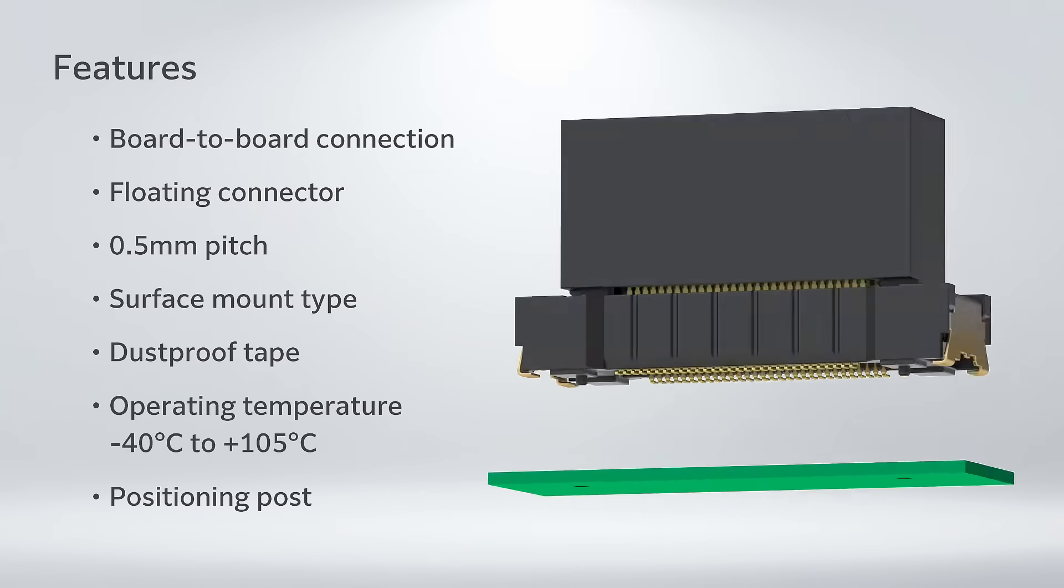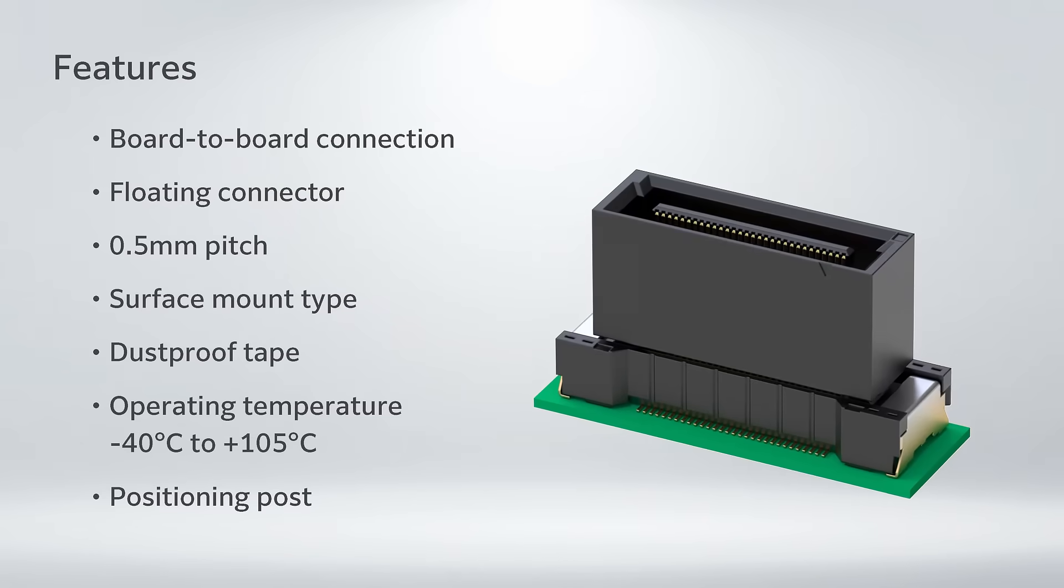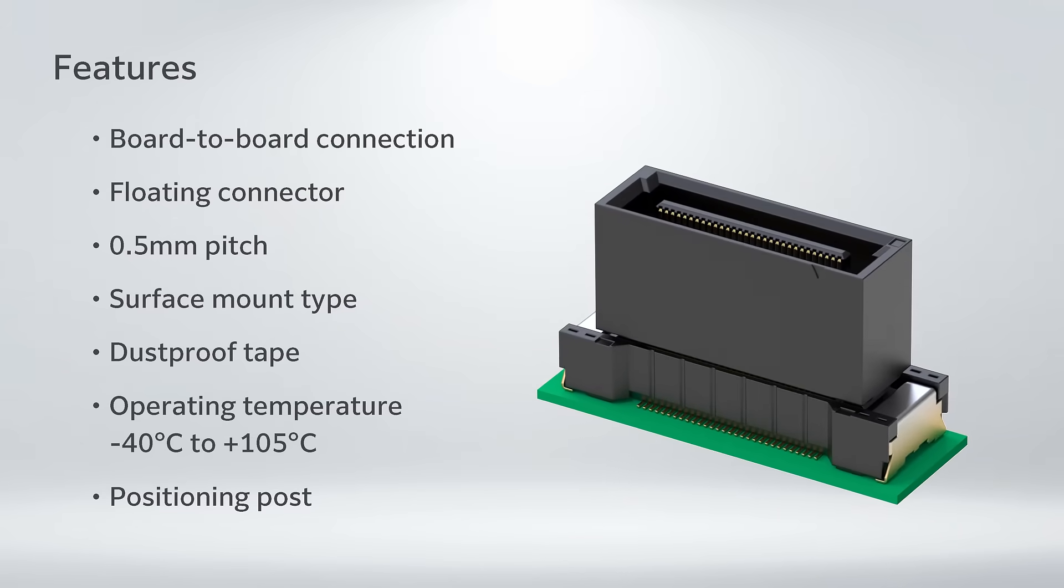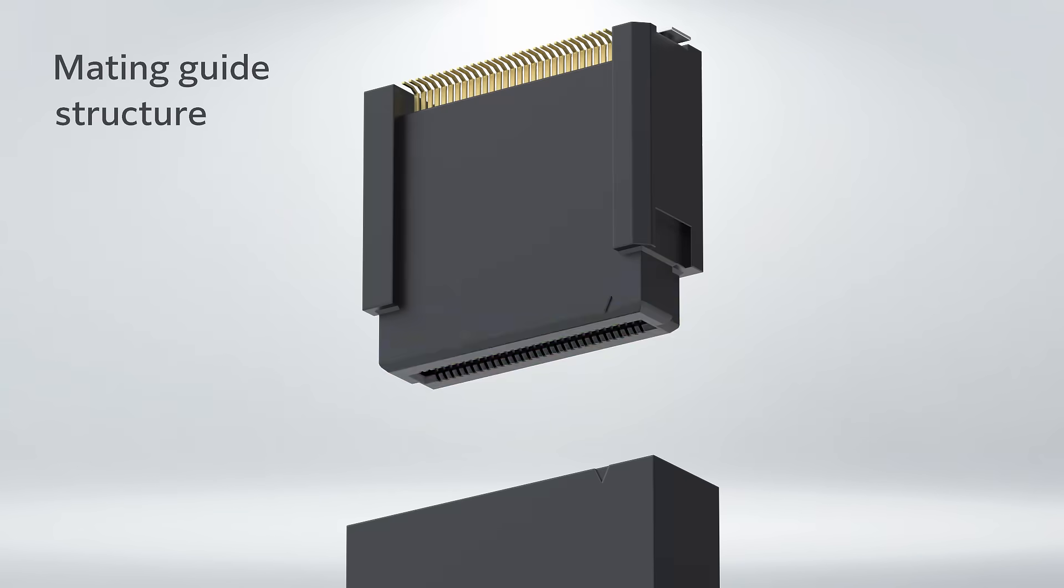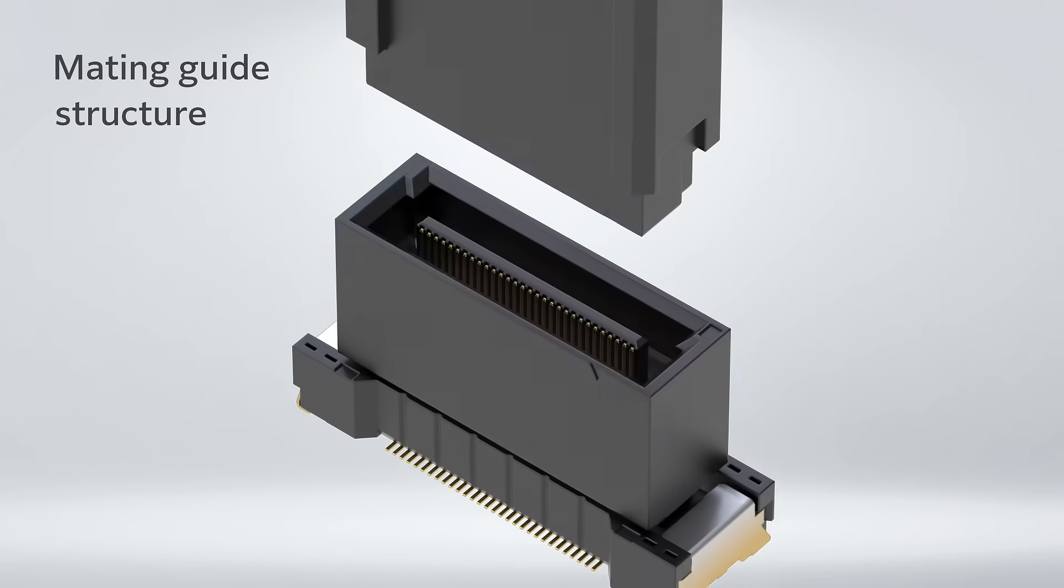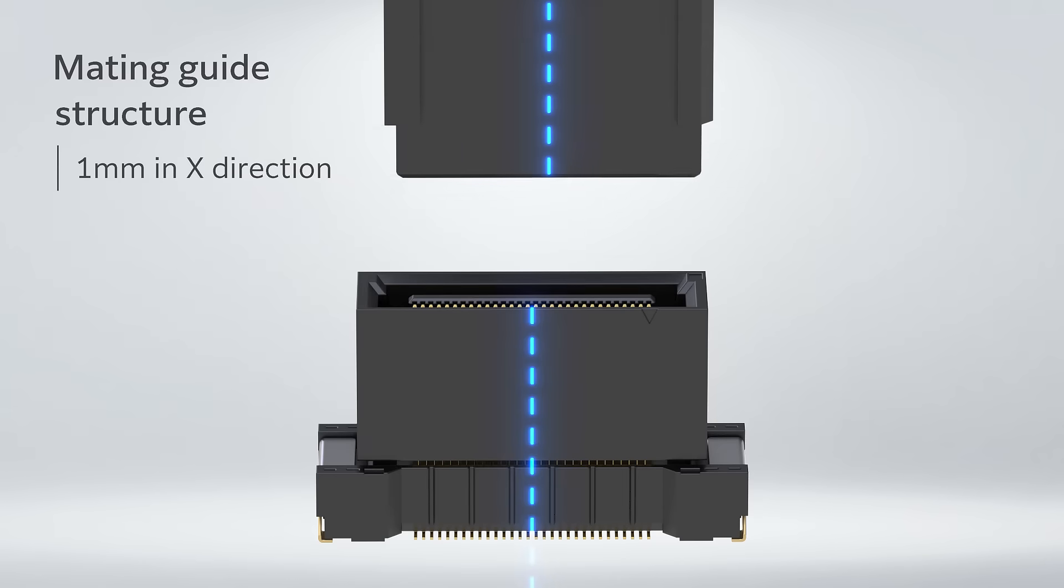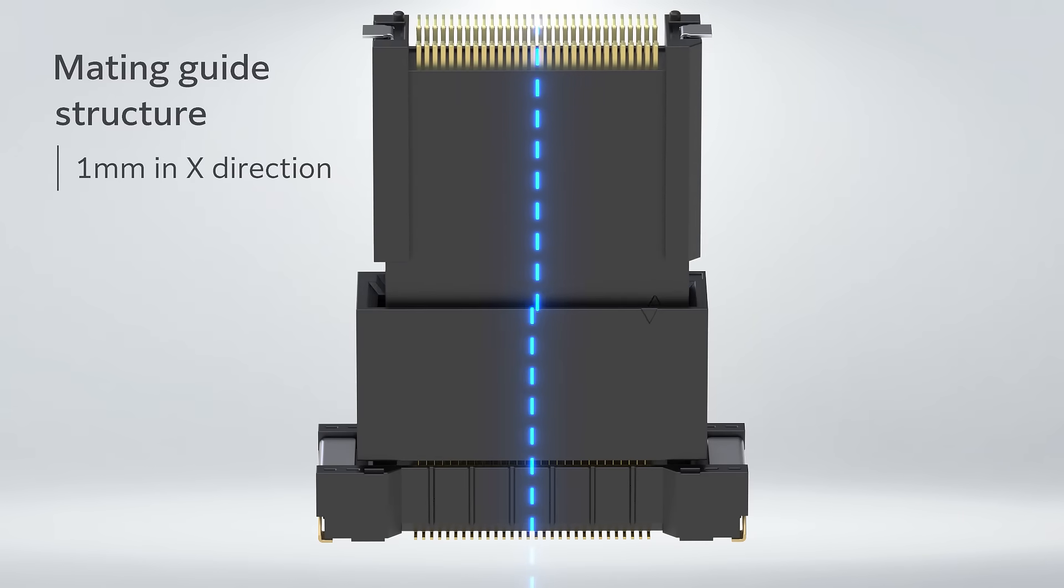It inherits the specifications and performance of conventional DT Series. There is a mating guide for 1.0mm in X-Y directions around the connecting part. The mating guide leads the plug-side connector to the correct position to mate.